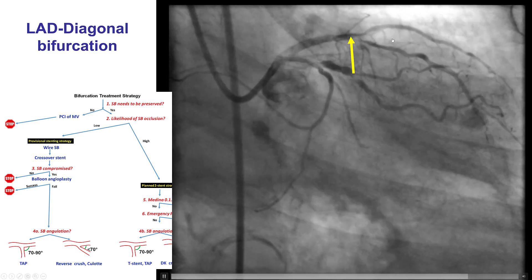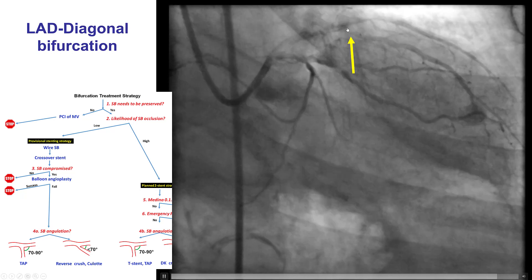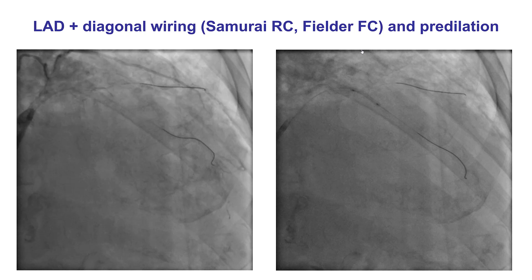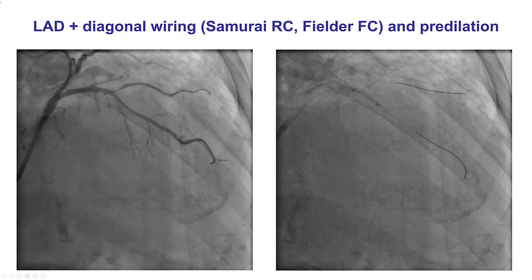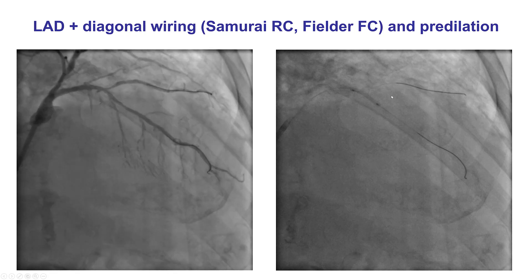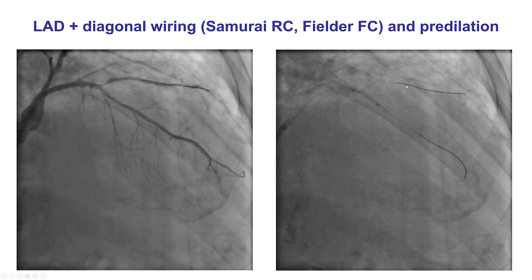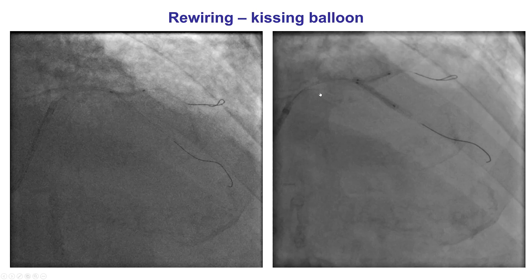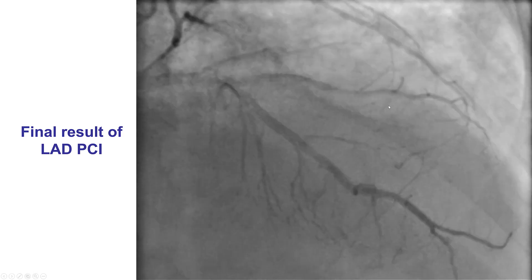Here is an example: a patient with an LAD-diagonal bifurcation — a complex Medina 1-1-1 bifurcation. An argument could be made for a two-stent technique, but after pre-dilating the diagonal seemed not terribly diseased, so provisional stenting was chosen. A wire was placed in both branches, then a stent was positioned across the origin of the diagonal and deployed. Then proximal optimization technique was done, rewiring into the side branch was performed, and kissing balloon inflation provided a nice final result. Intravascular imaging can be very useful to ensure an excellent result has been achieved.